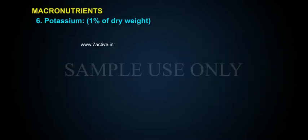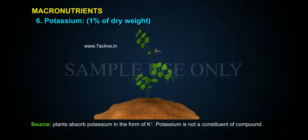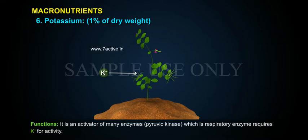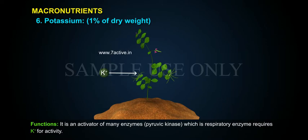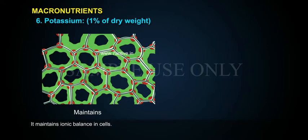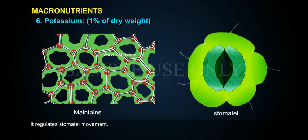Potassium constitutes 1% of dry weight. Source: plants absorb potassium in the form of K+. Potassium is not a constituent of any compound. Functions: It is an activator of many enzymes. Pyruvic kinase, which is a respiratory enzyme, requires K+ for activity. It maintains ionic balance in cells and regulates stomatal movement.